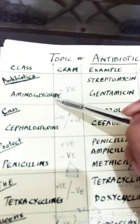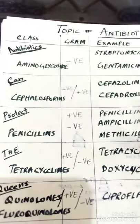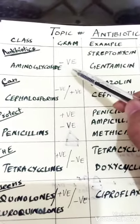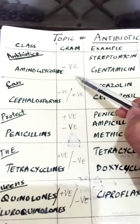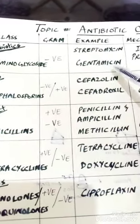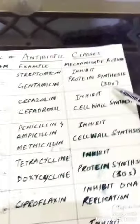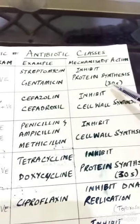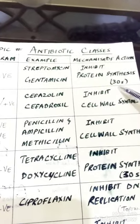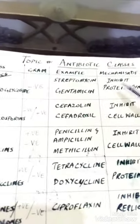The first antibiotic class is aminoglycosides. It specifically acts on gram-negative bacteria and kills them. Examples of aminoglycosides are streptomycin and gentamicin. The mechanism of action is that it inhibits protein synthesis in the bacterial cell.